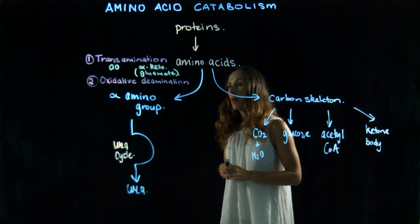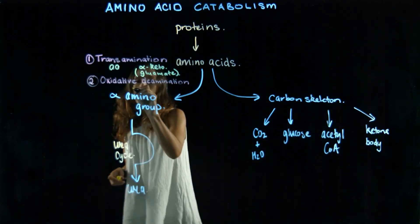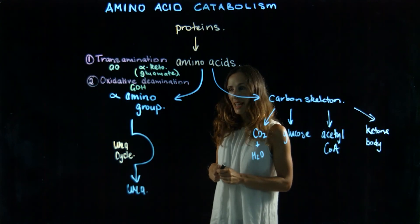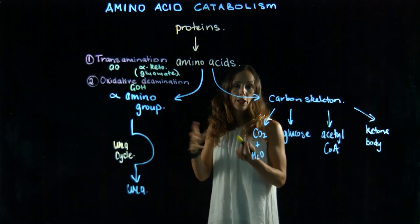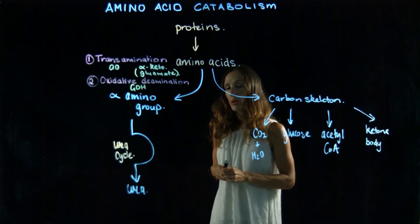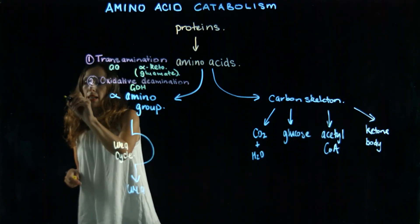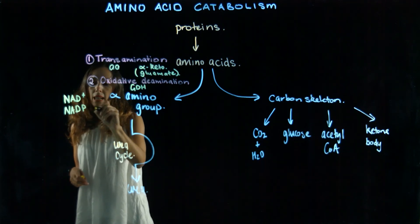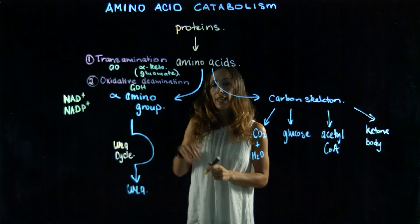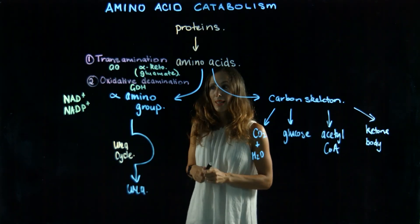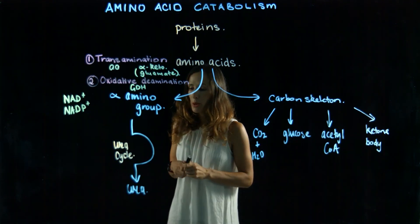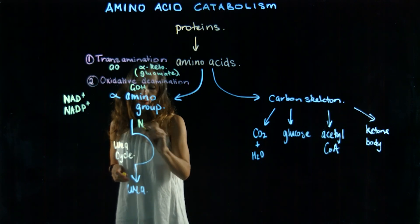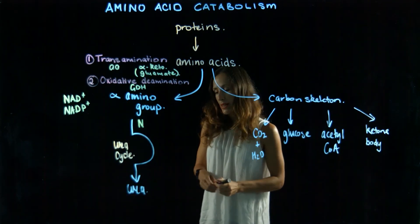The second reaction occurs with the glutamate that we have, and is carried out by glutamate dehydrogenase. As the name suggests, it acts on glutamate and it's a dehydrogenase, so we're thinking of oxidation and reduction reactions. This is carried out in the mitochondria, and it's interesting because it can use either NAD+ or NADP+ as its cofactor — both of which are reduced in the process. As a result, we get ammonium ion being produced, and that is what enters our urea cycle, ultimately ending up excreted in the urea molecule.